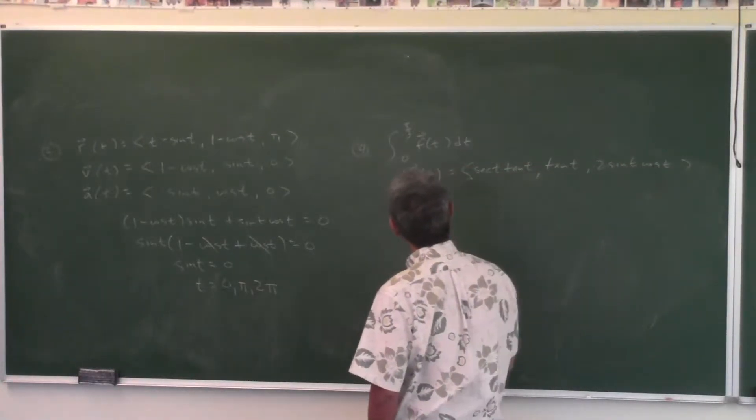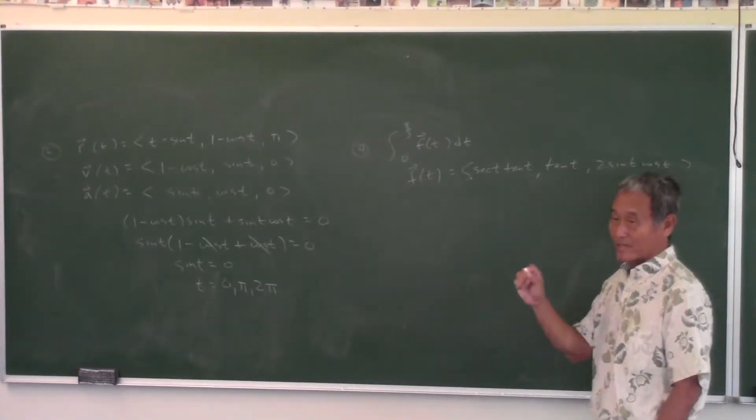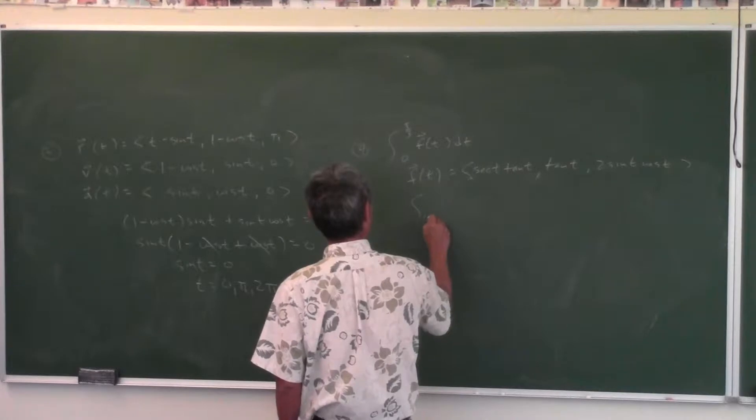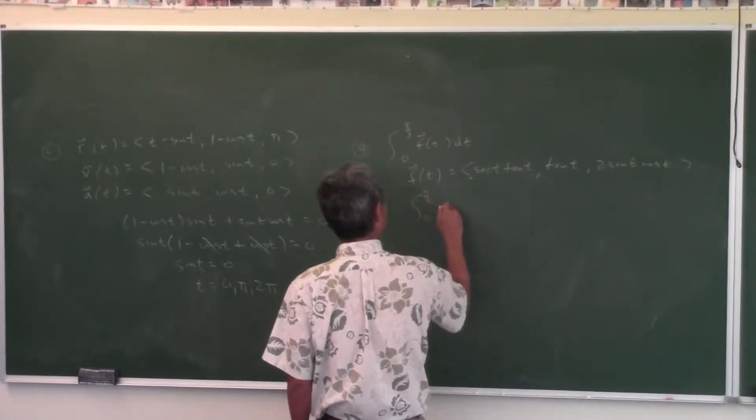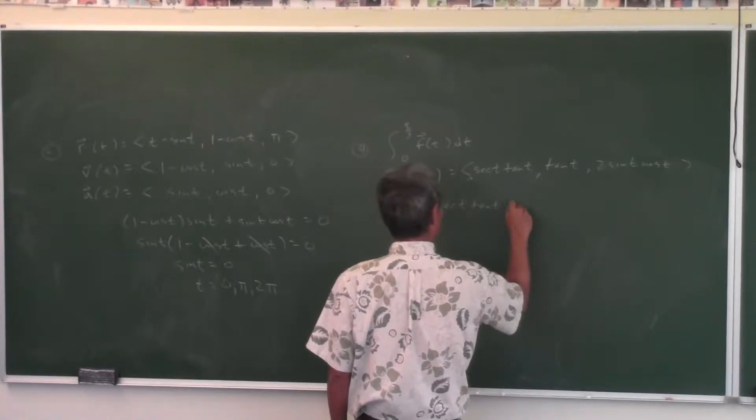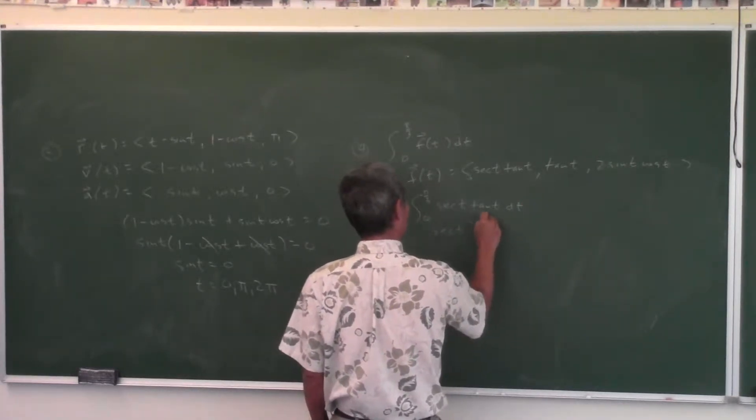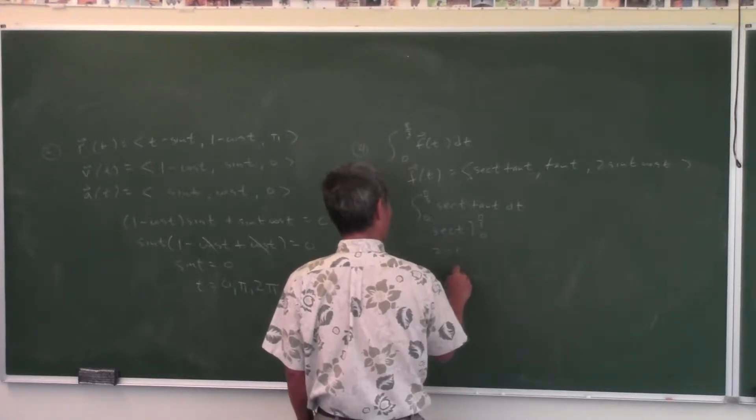Okay, so what you can do then is if you want to find the integral from zero to pi over three, just integrate each component. So if you do the first one, integral from zero to pi over three of secant t tangent t dt, we did this one yesterday, yeah? We get secant t from zero to pi over three, which is two minus one, one.